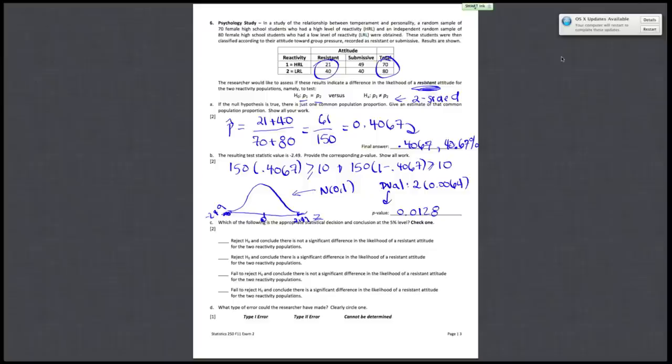Alright, so now that you have your P-value, the next question is, which of the following is the appropriate statistical decision and conclusion at the 5% level? So first of all, since your P-value is less than 0.05, you want to reject H-naught. So these two statements can't be right.